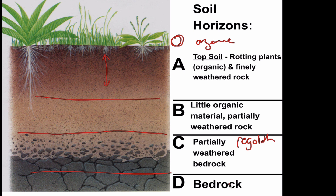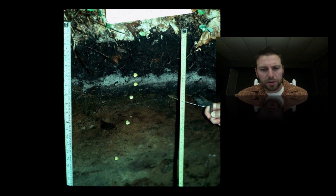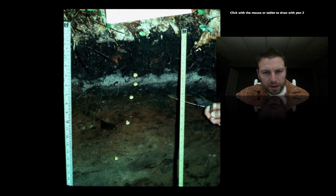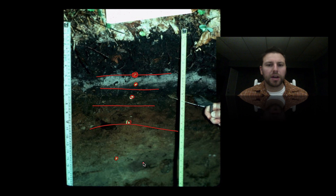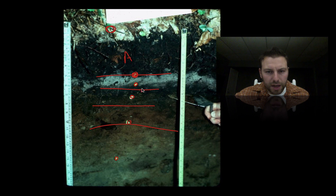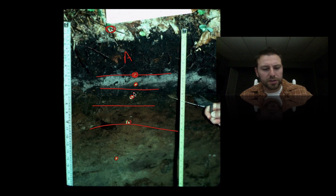Sometimes you'll have all these layers, sometimes none — it depends on the area. But in a typical region, given enough time and little disturbance, sediments will pile up with organic material on top. Here, this person made a cross section and marked the different horizons. You can see the distinct soil layers marked: the organic layer at the top, A for topsoil, B, C, and D further down — there are clearly distinguished differences between these.